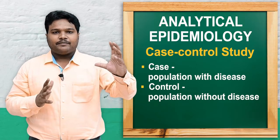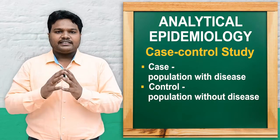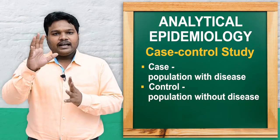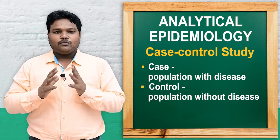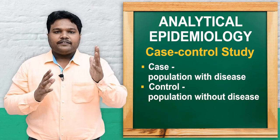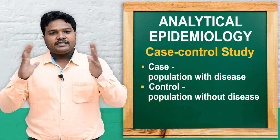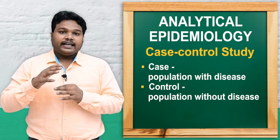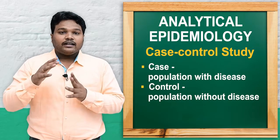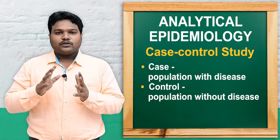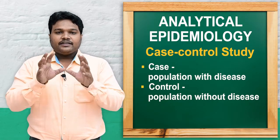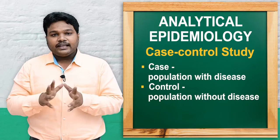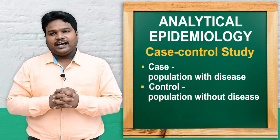For example, people with diabetes are cases, and people with no diabetes are controls — they are not having any disease. We then compare what the diseased population is doing versus what the non-diseased population is doing: what remedy measures they follow, what healthy interventions they practice, what health-promotive habits they maintain. By this differentiation, we can draw inferences about the population groups.